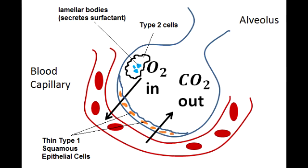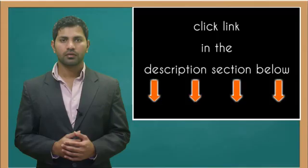What does a lecithin-to-sphingomyelin ratio greater than 2 indicate? A lecithin-to-sphingomyelin ratio greater than 2 in the amniotic fluid indicates fetal lung maturity.